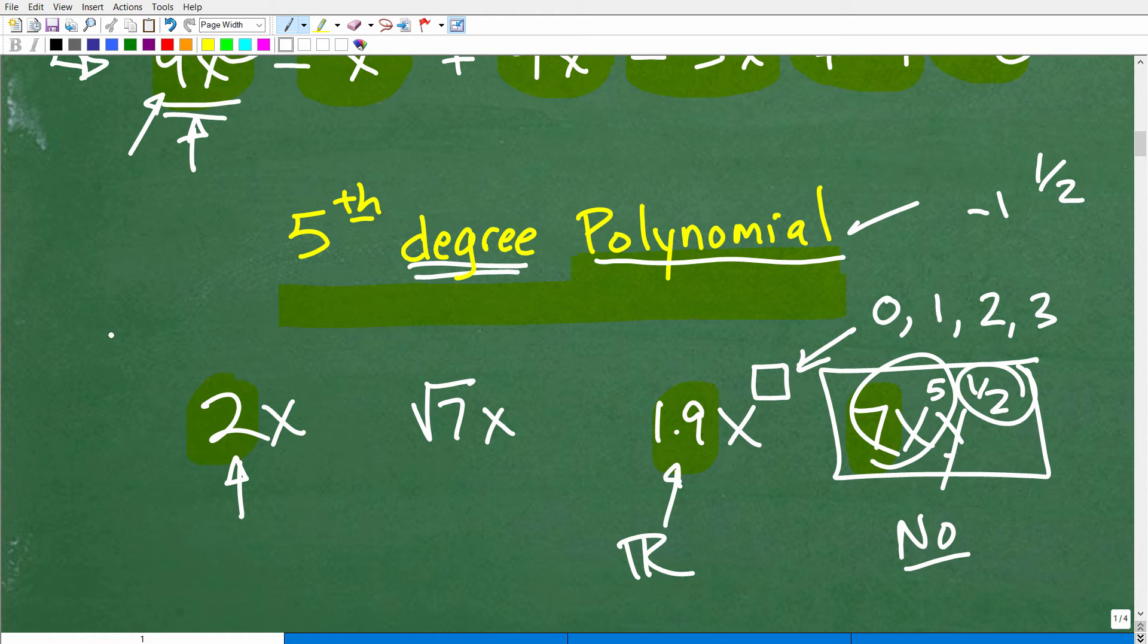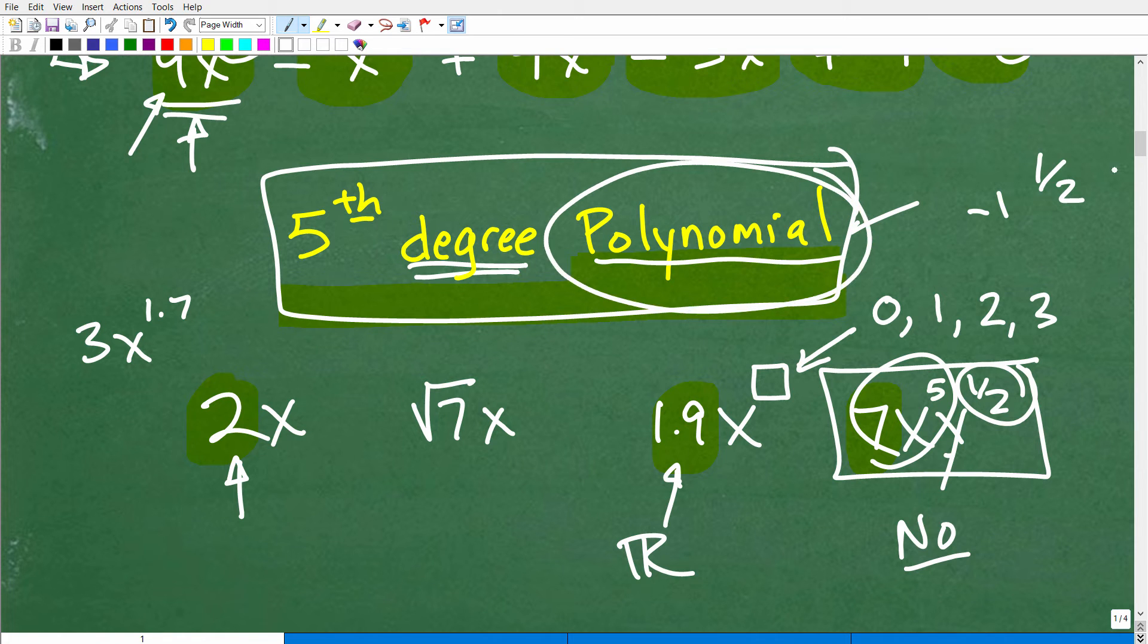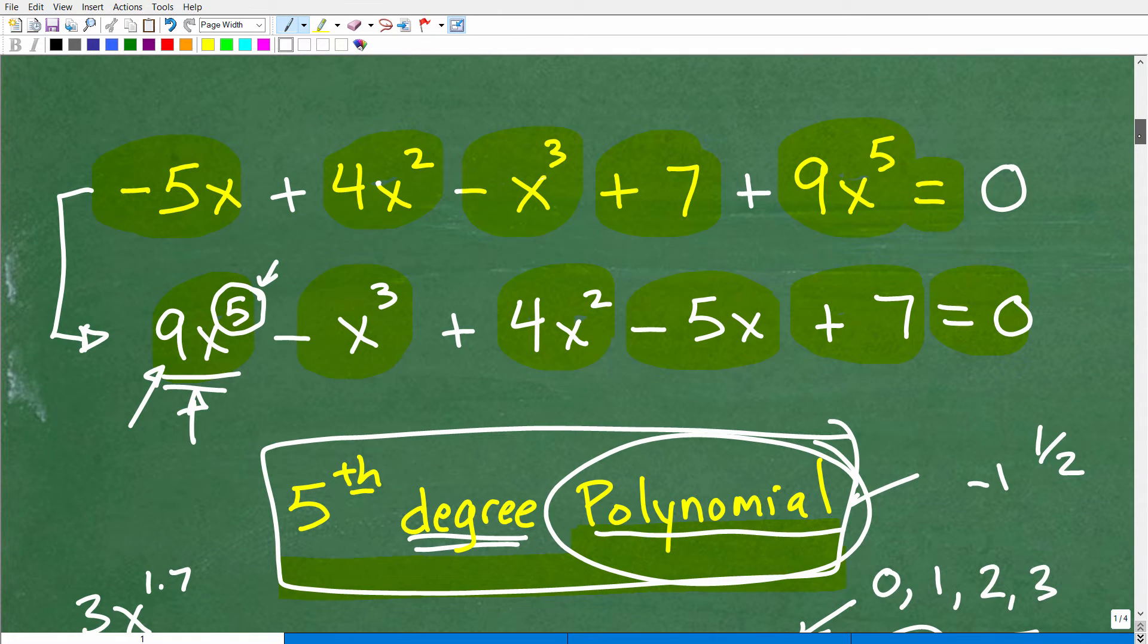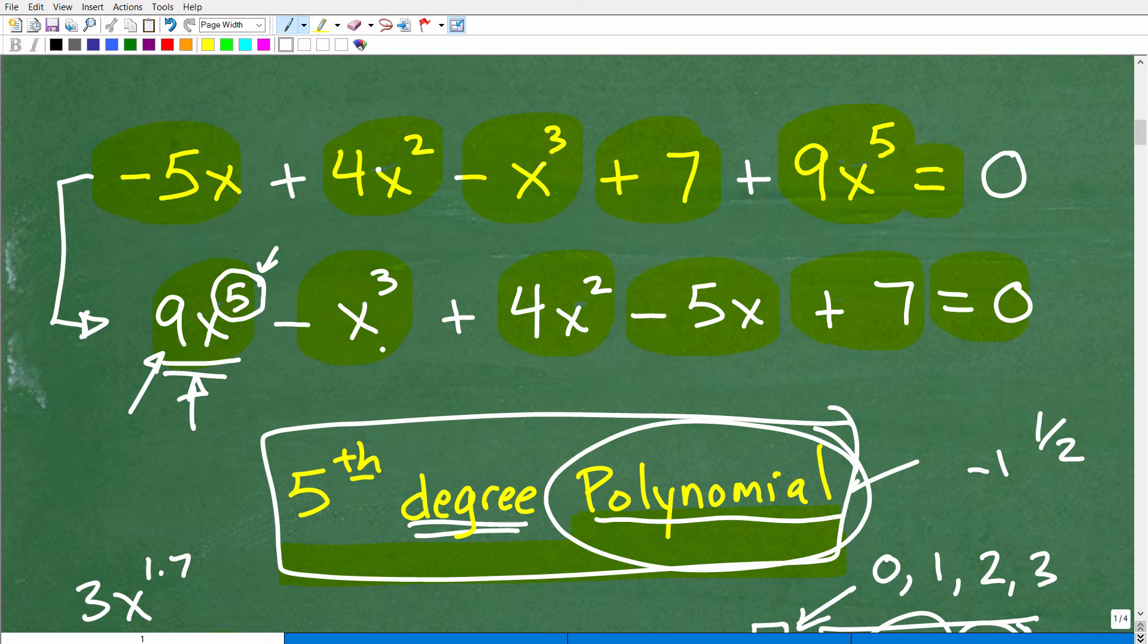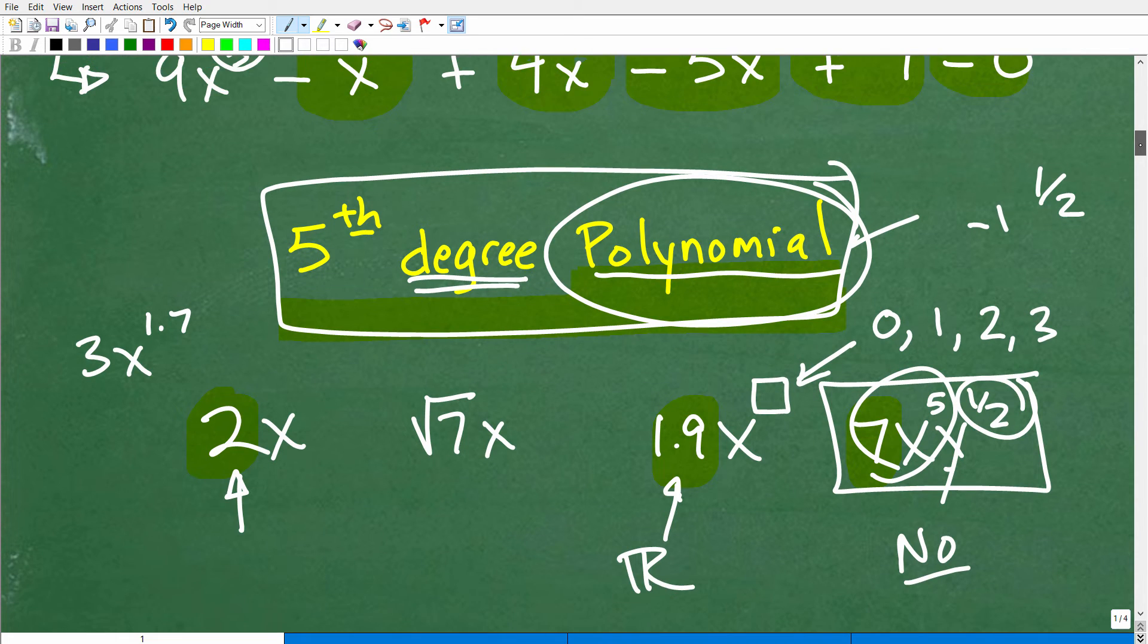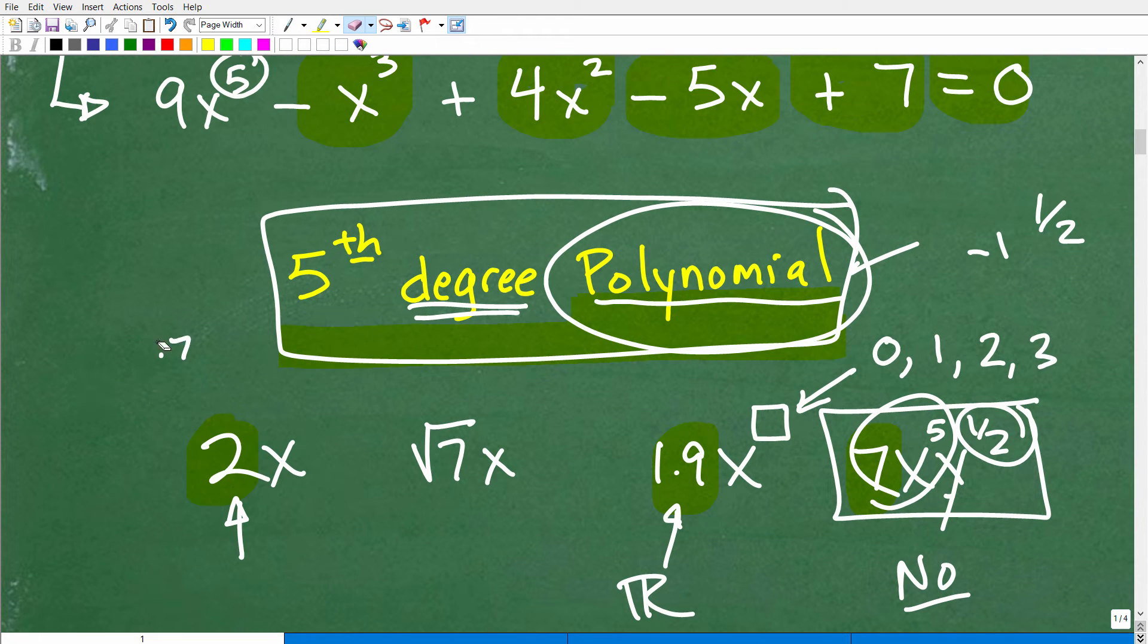A positive integer plus 0. So, very important that you understand that. If you're dealing with something like 3x to the 1.7, now we're talking about something entirely different. It's not a polynomial. So, the fundamental theorem of algebra only applies to polynomials.